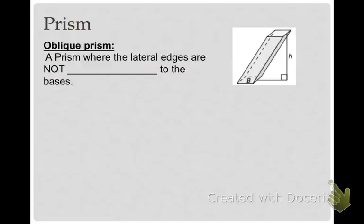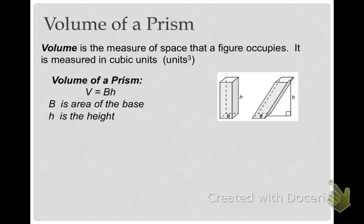An oblique prism is a prism where the lateral edges are not perpendicular to the bases. It's kind of like the Leaning Tower of Pisa, where the bases are still parallel, but the sides are not perpendicular. Regardless if it is an oblique or a right prism, you use the same formula to find the volume.